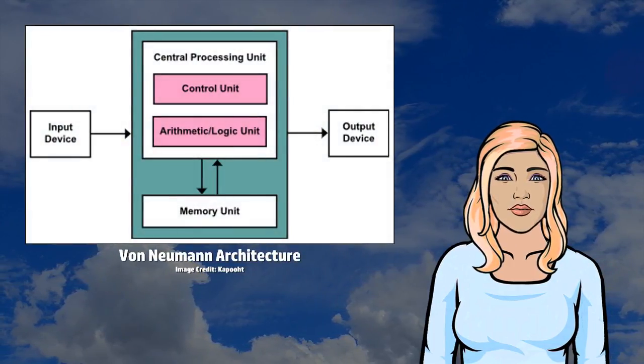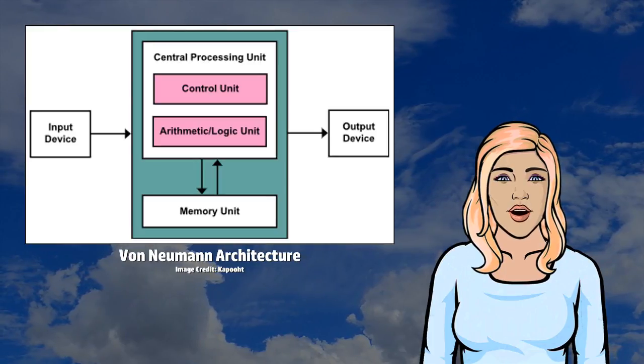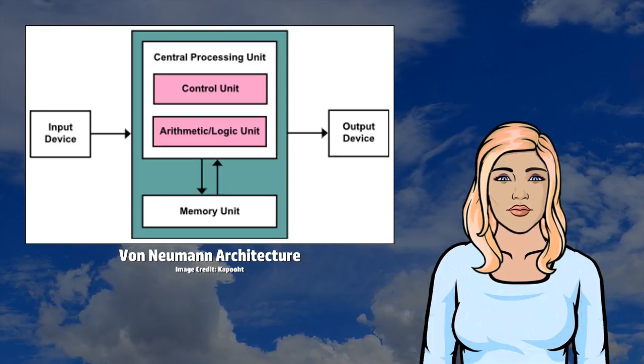The template for all modern computers is the von Neumann architecture, detailed in a 1945 paper by Hungarian mathematician John von Neumann.